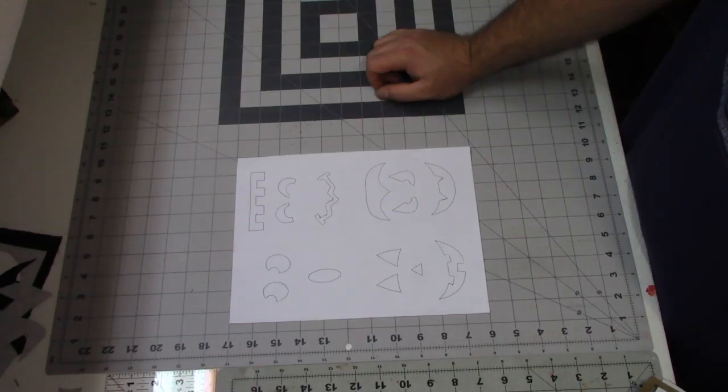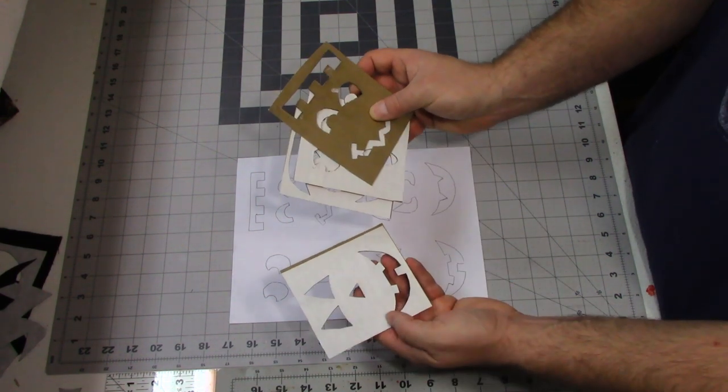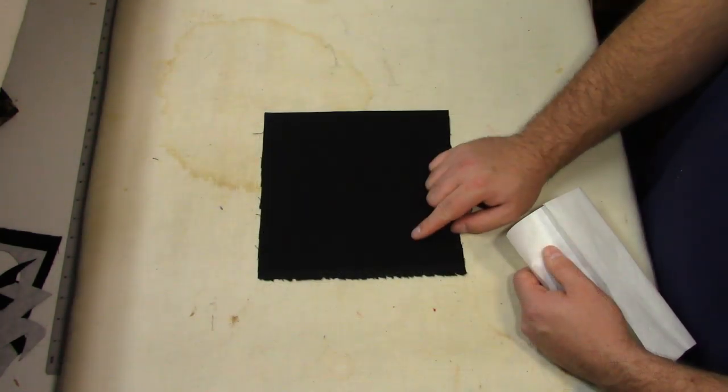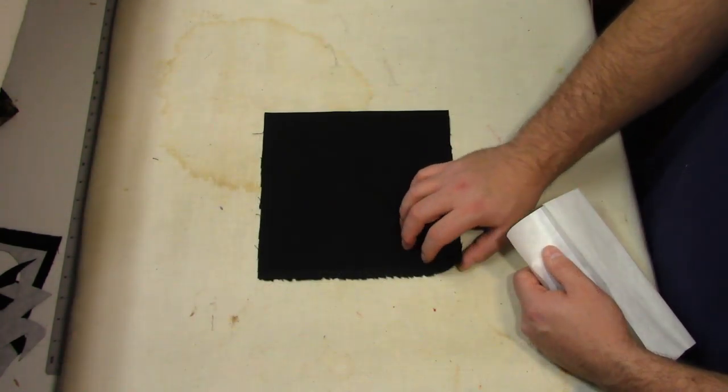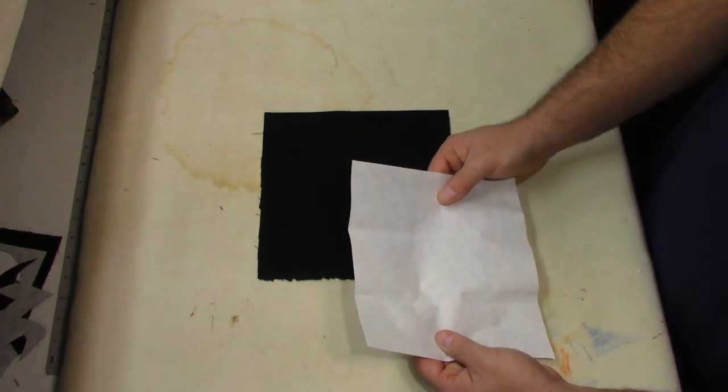The first thing I did was hit up Google. I found the faces that I wanted to do. I glued it to some cardboard and cut out my stencils. Then you want to take your scrap piece of black fabric. If it does have a face, you want to put that face down.